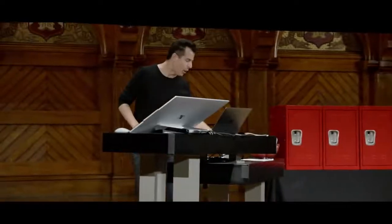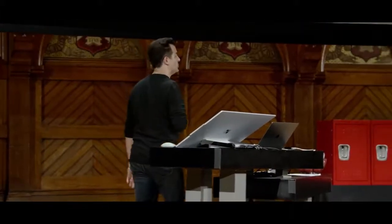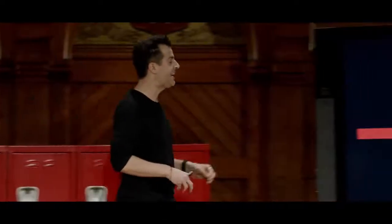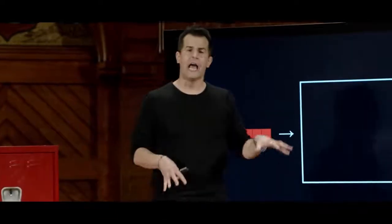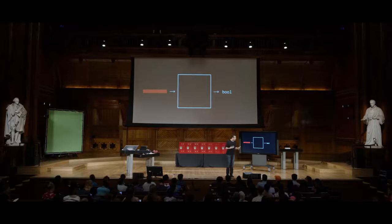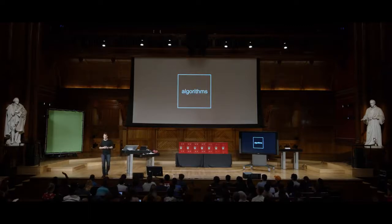We've gone ahead and populated these lockers with a bunch of numbers. The goal is to find one of those numbers. If we distill computer science into this problem-solving mechanism, the input today is these seven lockers, and the output is going to be a Boolean — true or false: is the number we're looking for among those seven lockers? Rather than my poking around, might I call on two volunteers to demonstrate two algorithms?